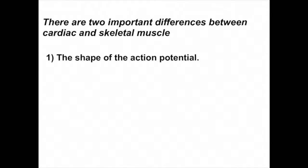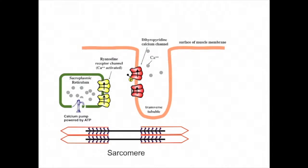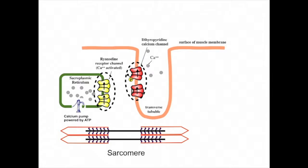The second difference is in the way that calcium is released from the sarcoplasmic reticulum. There are two main features that account for the different ways that calcium is released in cardiac muscle. The first is the difference in the dihydropyridine receptors, the voltage-gated calcium channels embedded in the membrane of the transverse tubules. The second is the way in which the channels of the ryanodine receptors are opened to allow calcium to flow from the sarcoplasmic reticulum into the sarcoplasm, thereby initiating contraction.